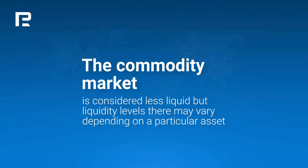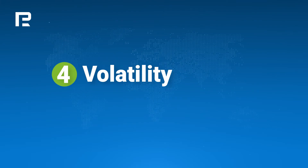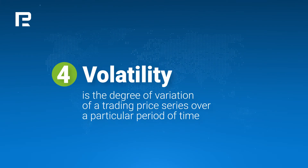In comparison with the currency market, stocks and commodities are believed to be less liquid. However, the liquidity level on these markets directly depends on the particular asset — for example, energies and precious metals are always more liquid than other assets.